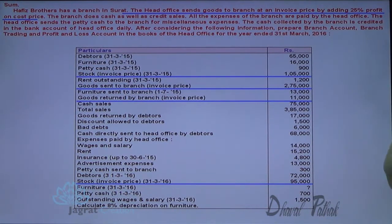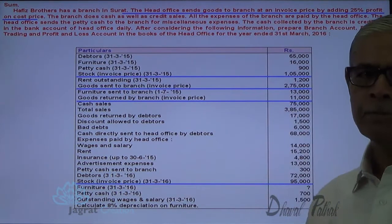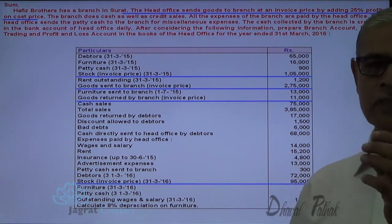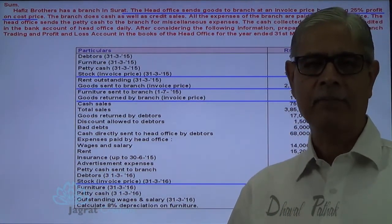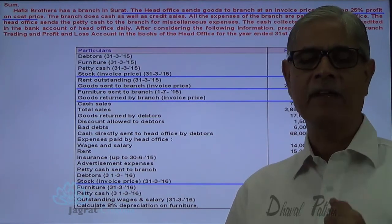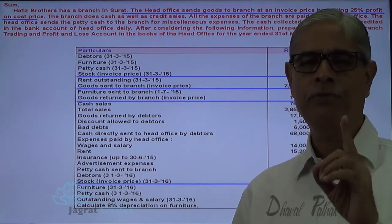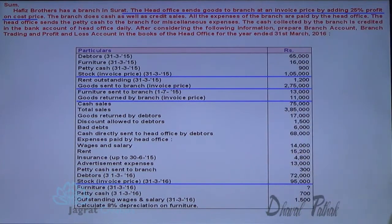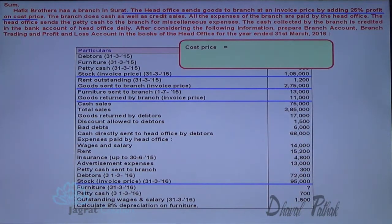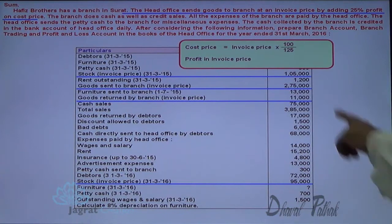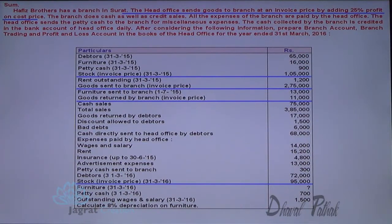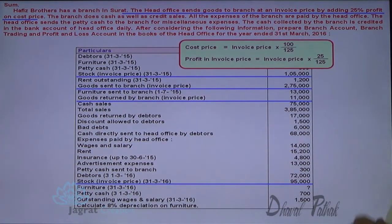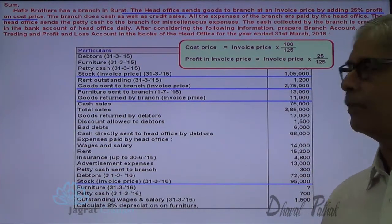The profit yield is 25% of cost price. So cost is 100, profit is 25, and invoice price is 125. Therefore 25/125 = one-fifth is the profit element and four-fifths is the cost element. Invoice price multiplied by four-fifths equals cost; invoice price multiplied by one-fifth equals profit.